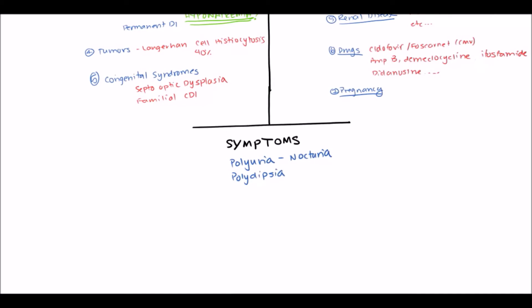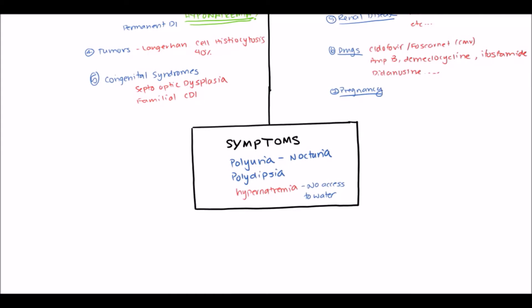Another finding to look for is hypernatremia. However, most patients — because they have polydipsia — can actually maintain a normal sodium level, perhaps on the high side of normal. They won't be able to maintain it only if there's something wrong with their thirst center, or if they have decreased access to water. This is more relevant in the very elderly, bedridden patients, infants, and children who can't get water themselves.